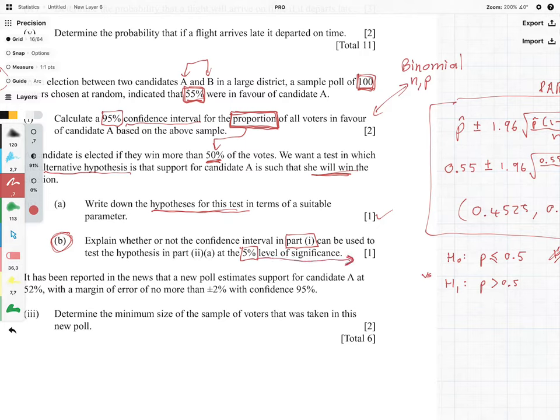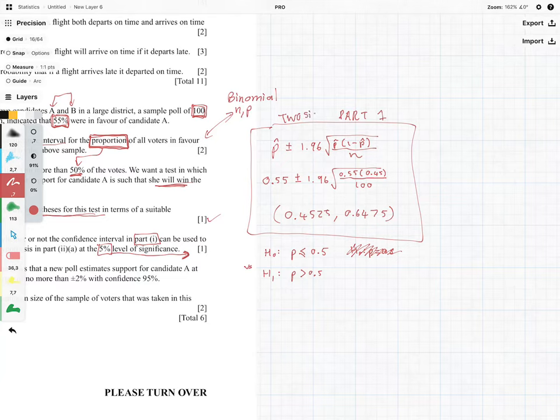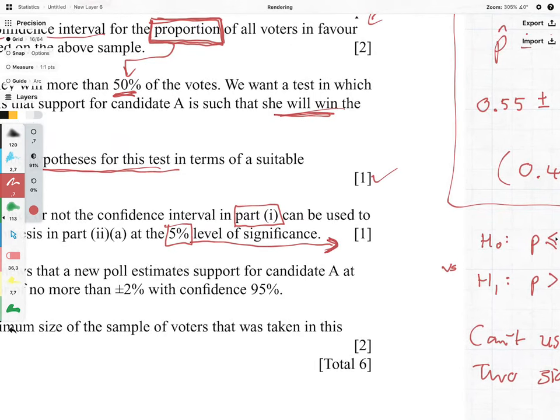So while it is true that we can use confidence intervals to test our hypotheses, we cannot use this one in part one, and the reason why we can't use part one is because we were using a two-sided test. So we were using a two-sided test at five percent, which means plus and minus we were having 2.5 and 2.5 on either side, which means we can't use it because it is a two-sided test, which means the one-sided would only be 2.5 percent and that is half the level of significance that we are looking for.